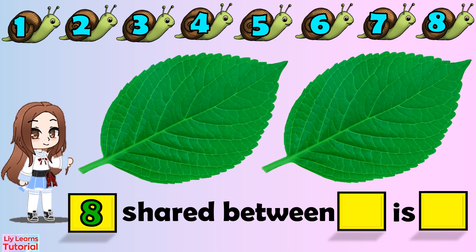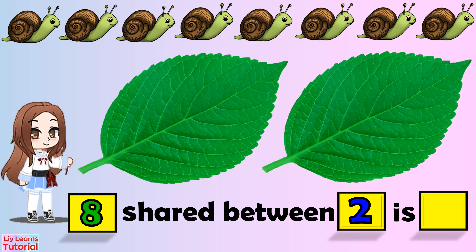Now count how many leaves are there to share the snails into. One, two. There are two groups. We then write two in the second box. Now we will share the snails equally between two leaves.